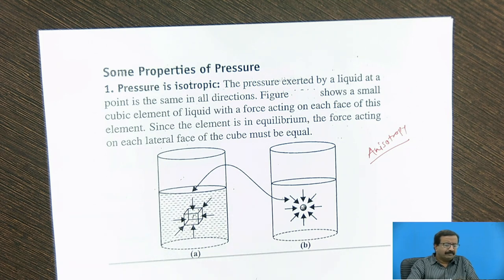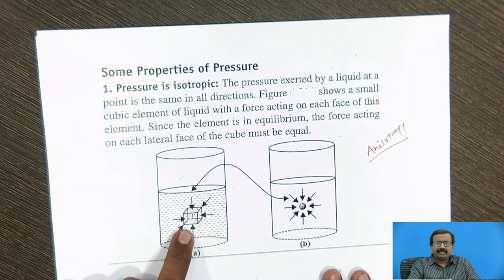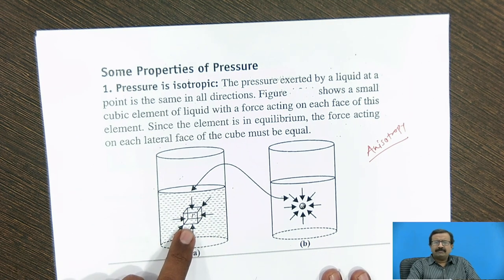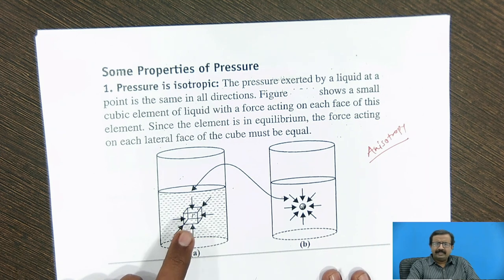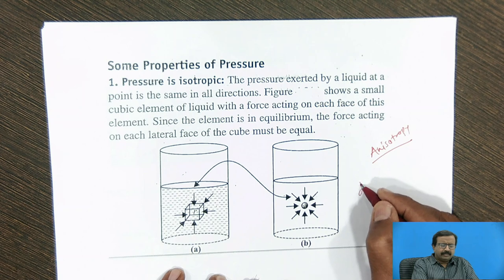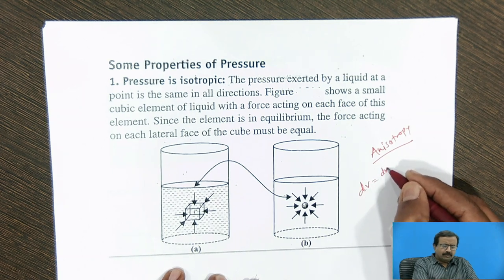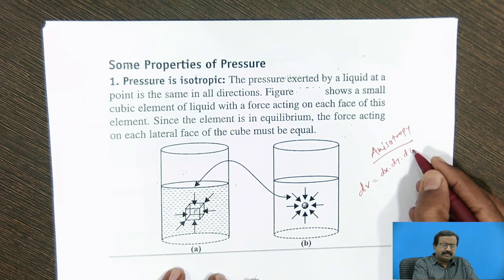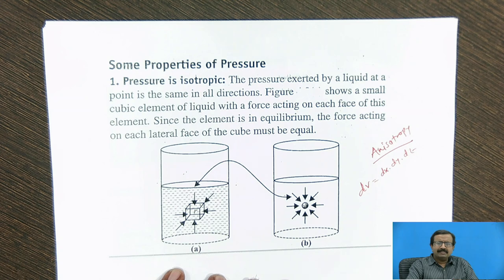Now you can just see here, if I take a container in which there is a small element that I consider. Now this is a small differential element. For analysis, from the mathematical point of view, we take it dx, dy and dz, it becomes a small volume element that we call as the dv, which is equal to dx, dy and dz. And in the limiting case, dx, dy, dz tends to zero.